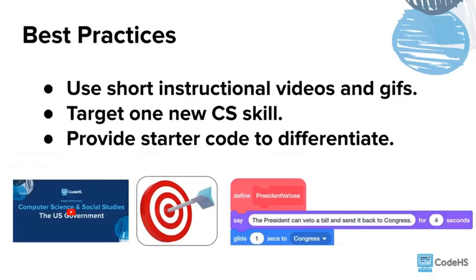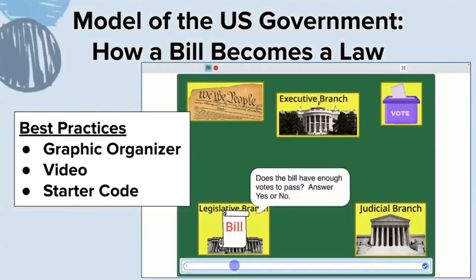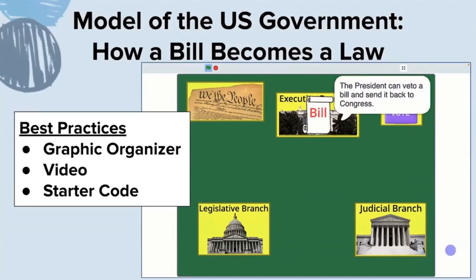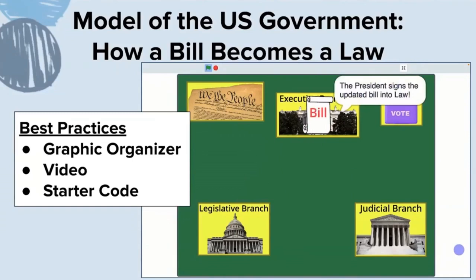Best practices, no matter your schedule, include using short instructional videos and GIFs that students can pause, rewind, and rewatch — and share with absent students. Target one new computer science skill for each social studies lesson, and provide starter code to differentiate so newer CS students don't get overwhelmed. Our first lesson is a model of the US government — an animation showing the three branches with a white scroll moving between them, starting as a bill and changing to law.